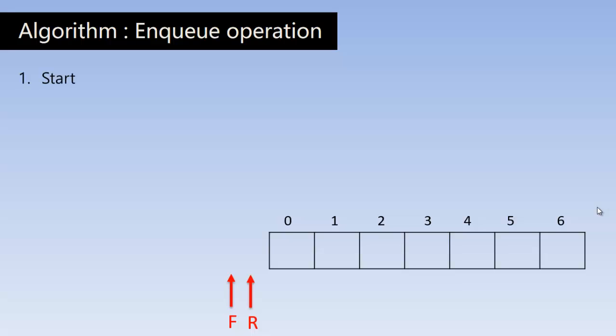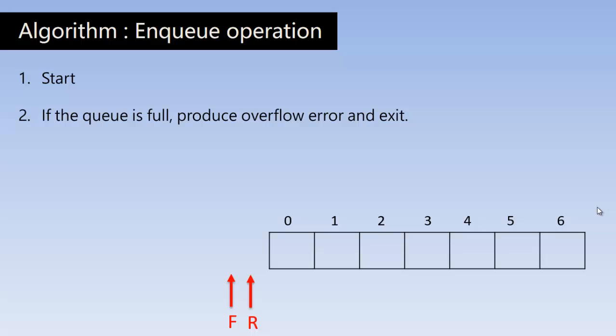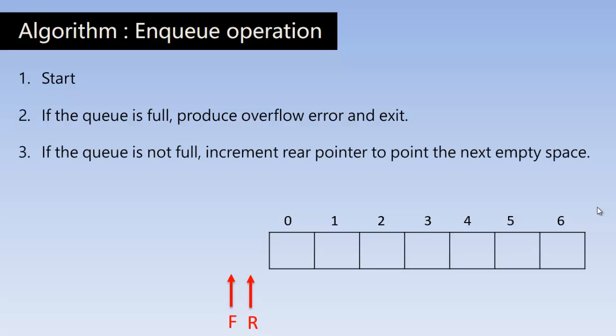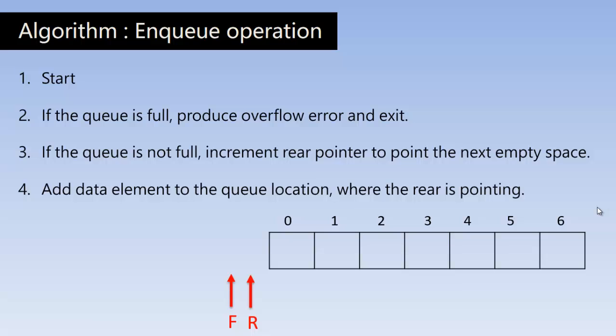The NQ algorithm starts as follows: before doing the NQ operation, first we check the queue. If the queue is full, produce an overflow error and exit — you cannot insert an element into a full queue. If the queue is not full, increment the rear pointer to point to the next empty space — in this context, to the zeroth index. Then add the element to the queue location where the rear is pointing, and return success.